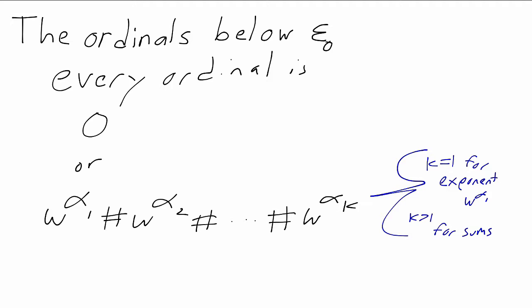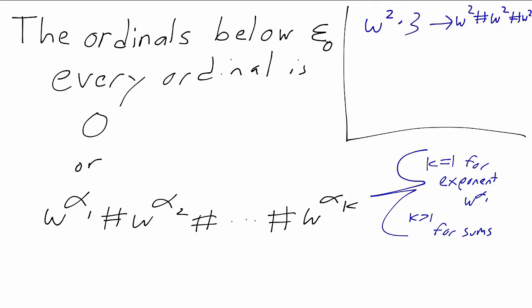You can see from this why we have addition and exponentiation but no multiplication. If we wanted to multiply by a finite number, we'd just add multiple times — so instead of omega squared times three, we have omega squared plus omega squared plus omega squared. And multiplication by infinite numbers turns into adding exponents: instead of omega to the alpha times omega squared, we write omega to the alpha plus two. So multiplication wouldn't build any new ordinals — it would just give redundant names.